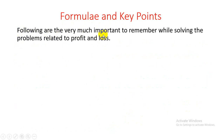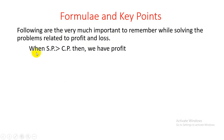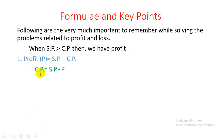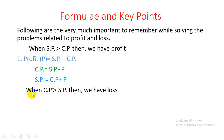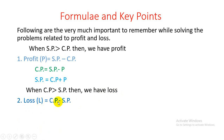When SP is greater than CP, we have profit. Profit P = SP − CP. CP = SP − profit. SP = CP + profit. When CP is greater than SP, we have loss. Loss L = CP − SP.